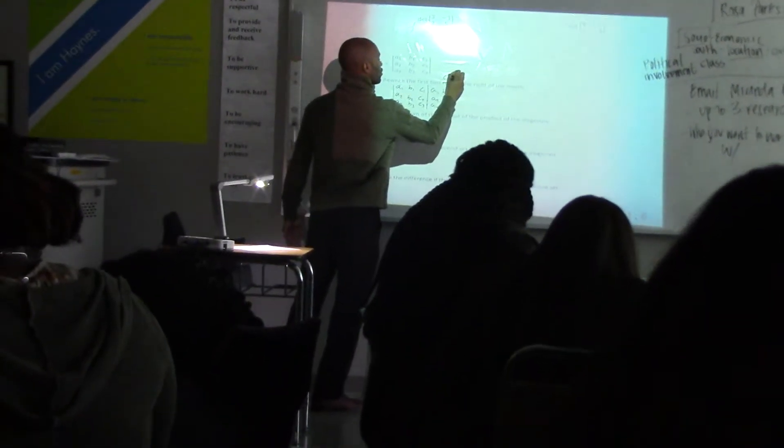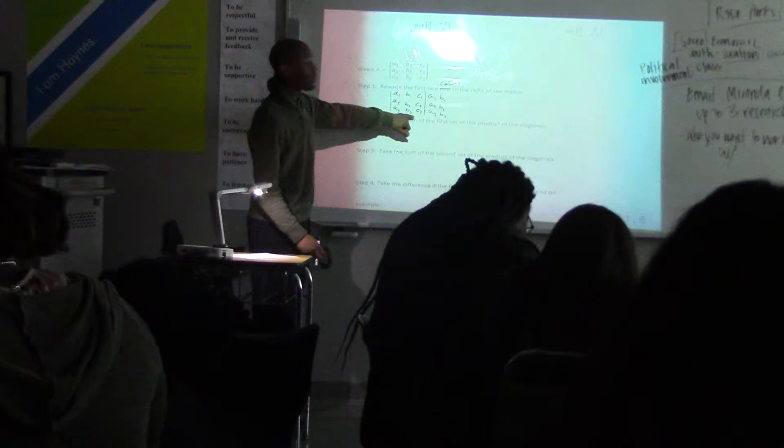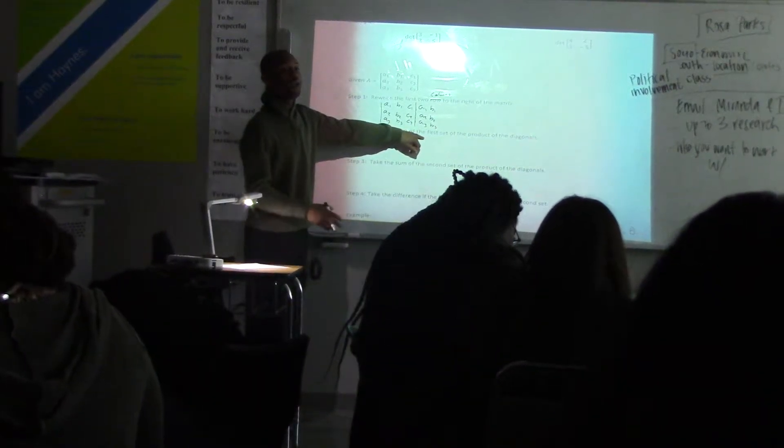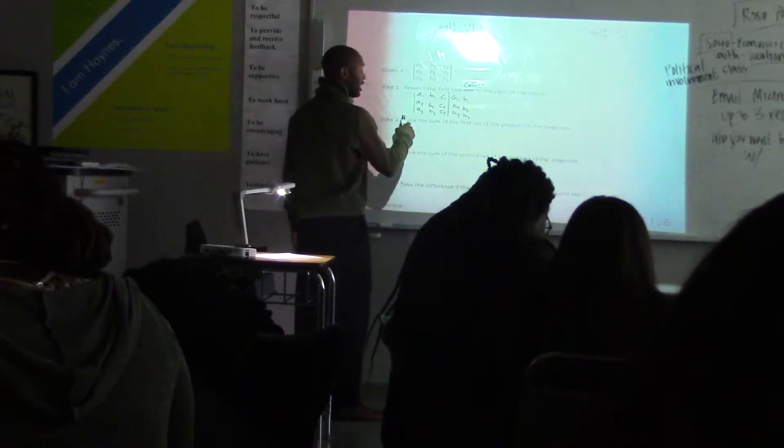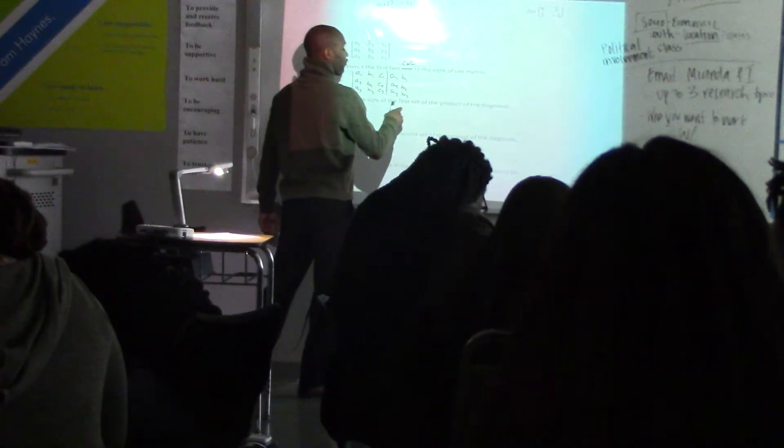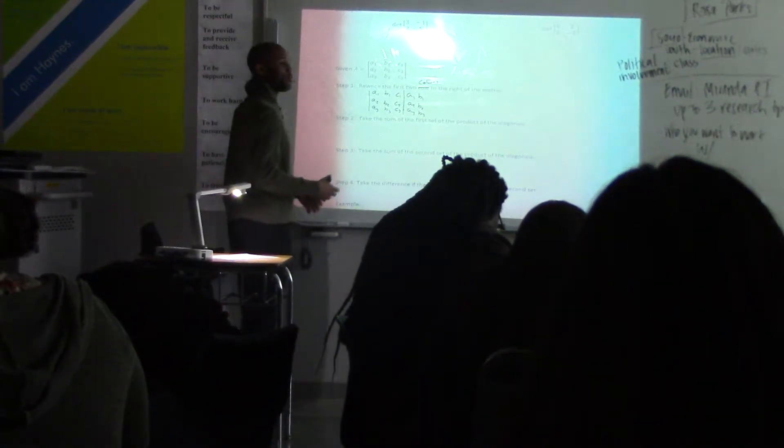And you'll write it like that. What about C? You just take the first two rows, the first two columns, it's supposed to be columns, I'm sorry. Change rows to columns. First two columns, and you just rewrite it to the right of your matrix.